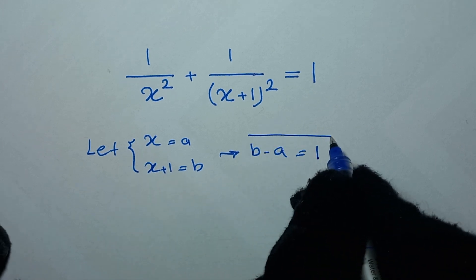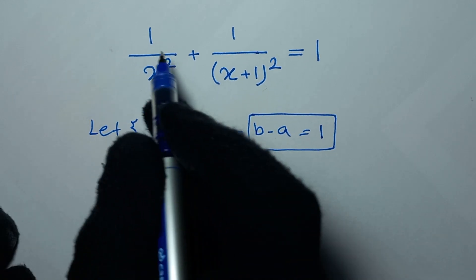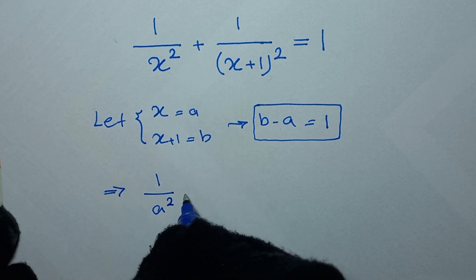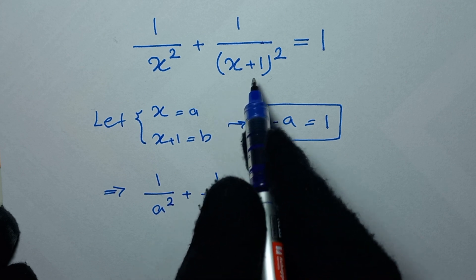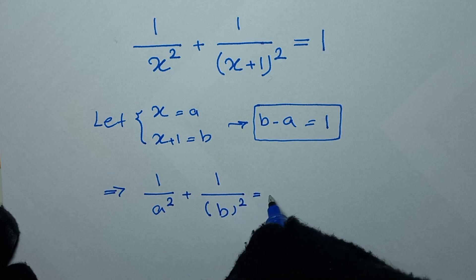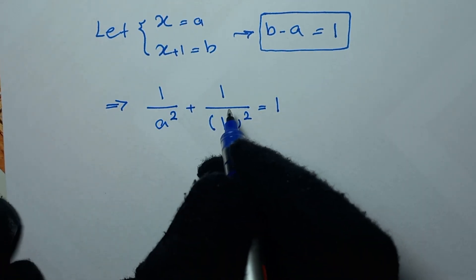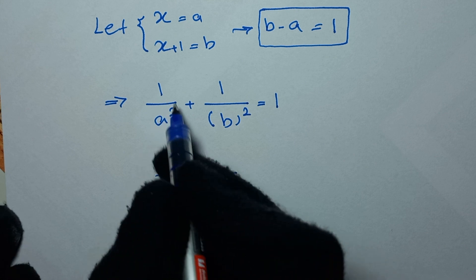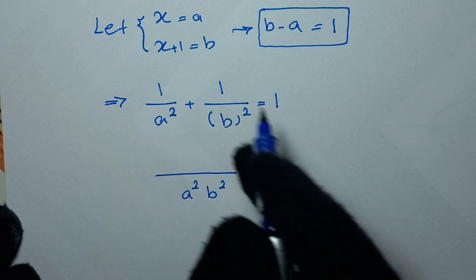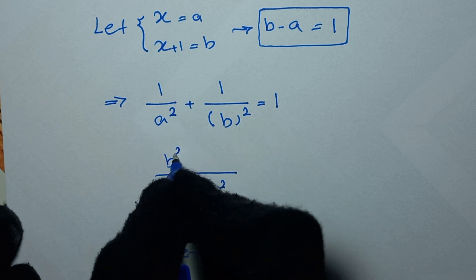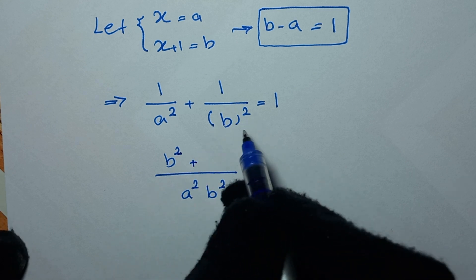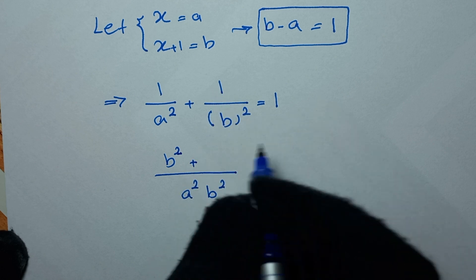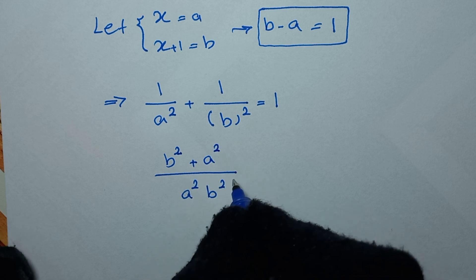In the next step, we rewrite this equation. Since x is a and x+1 is b, it becomes 1/a² + 1/b² = 1. We take the common denominator a²b². For the first fraction we multiply numerator by b², giving b², and for the second fraction we multiply by a², giving a². So b² + a² over a²b² equals 1.